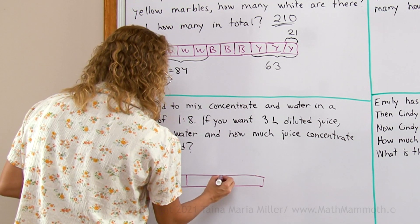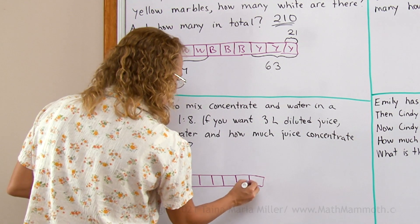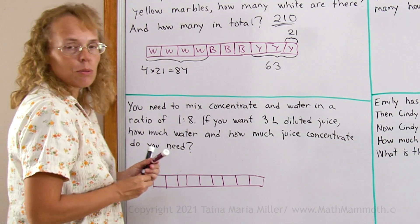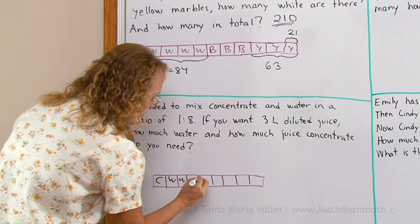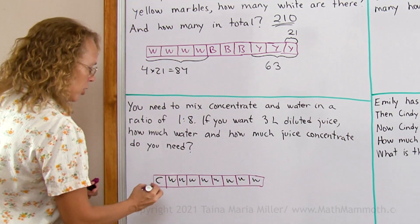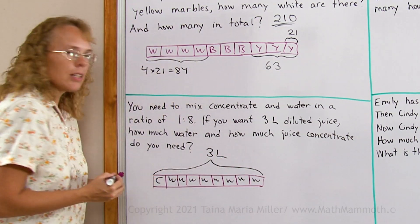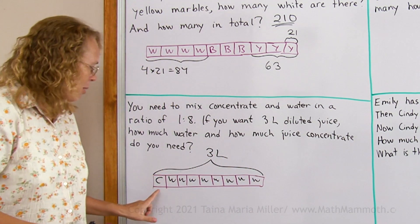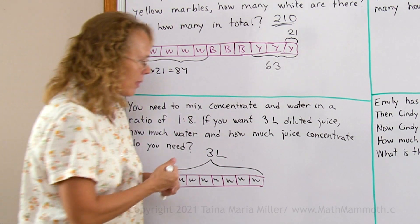Try to divide it in 3 parts. Then each one into 3. There. And now 1 of these is for the concentrate and the rest of it is water. And in total this is 3 liters. So all I need to do is find how much is one of these blocks. 3 liters divided by 9.